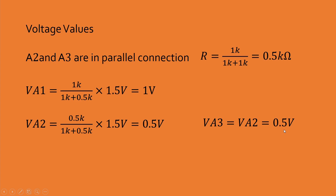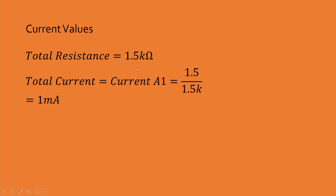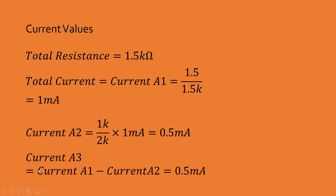Now for the current values. The total resistance of the mini project is 1.5k ohm, so the total current is equal to 1mA, found using Ohm's law. The total current is equal to current A1. The current A2 is equal to 0.5mA, found using the current divider rule. And current A3 is equal to the total current minus current A2, which is also 0.5mA.